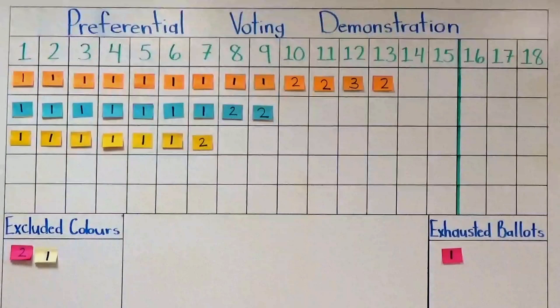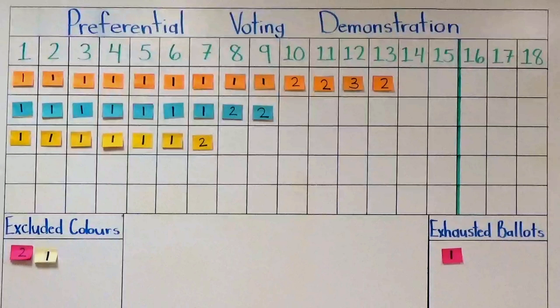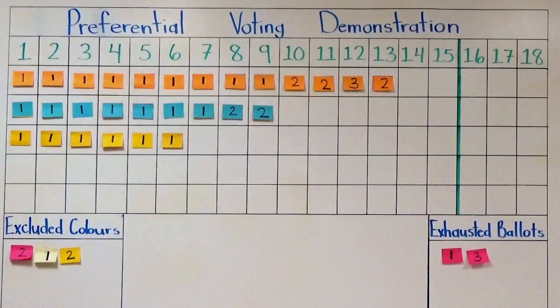Following the second count, we still do not have a clear winner, so a third round of redistribution of votes is coming up, using the yellow votes as they are next to be excluded because now they have the least amount of votes. Watch how this redistribution plays out to determine a winner.